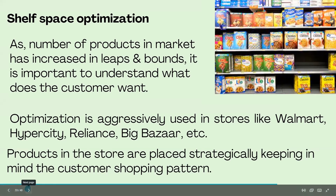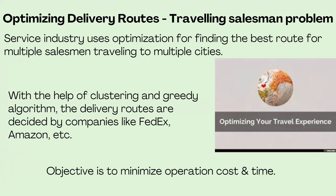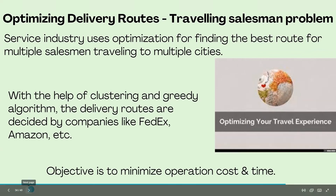Optimizing delivery routes is used by every industry. The service industry uses optimization to find the best routes for multiple salesmen traveling to multiple cities. Companies use different types of algorithms like clustering and greedy algorithms. Companies like Amazon or FedEx use this for their purposes. The aim remains the same: minimize operation cost and time while ensuring on-time delivery.